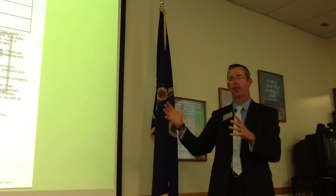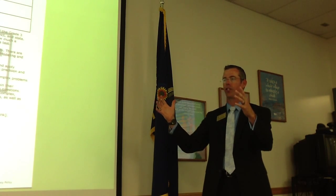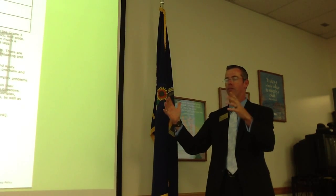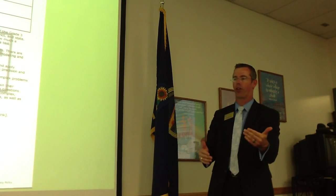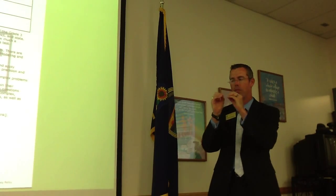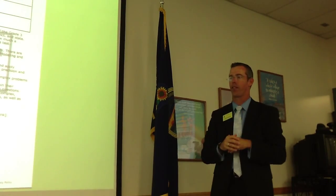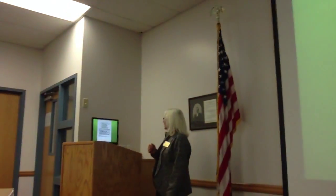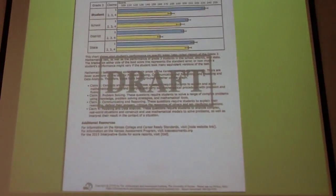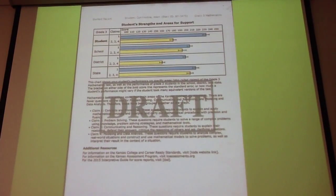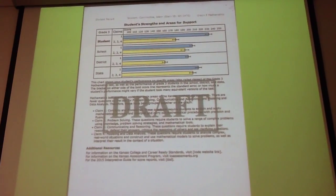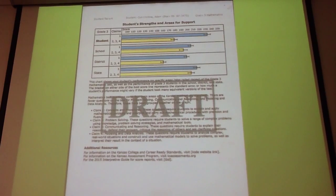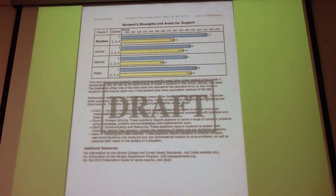That's how you look at the overarching thing — claim reading. Targets are the actual specific things they're looking for. If you look at the back side of the Adams report, it identifies it here. You'll see the student score compared to the school score, the district score, and the state score.